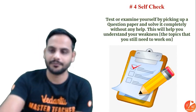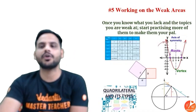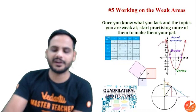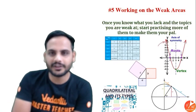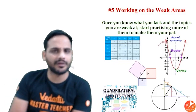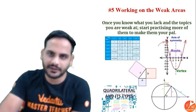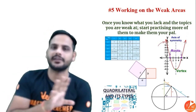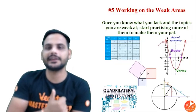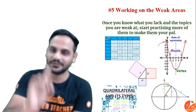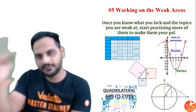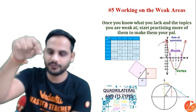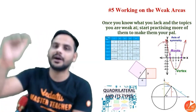The fifth tip is working on weak areas. After taking a test, you'll know — for example, triangles is weak, or you forgot trigonometry tables, or you don't remember the circle theorems. Start working on those chapters. Weak areas are only found when you take tests. After identifying them, practice more on those, then take another test — you will see your marks improve.